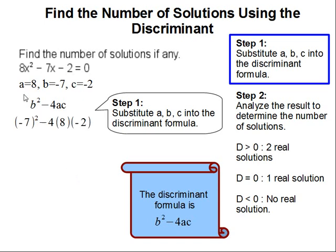So now we are going to substitute that into the discriminant formula. That's going to get us negative 7 squared minus 4ac, so minus 4 times 8 times negative 2.